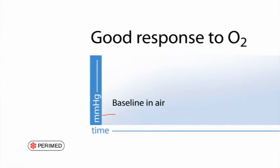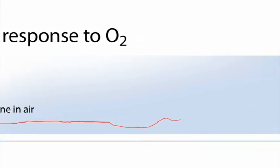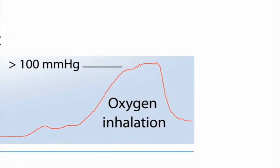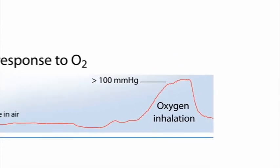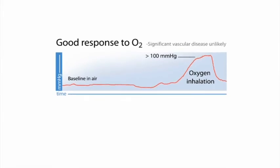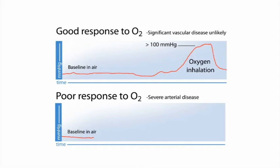In healthy people breathing 100% oxygen at normobaric pressure, TCPO2 values always increase to greater than 100 millimeters of mercury. Such a response to breathing oxygen indicates that significant macrovascular disease is not likely. An increase in TCPO2 when breathing normobaric oxygen that is less than 30 millimeters of mercury is consistent with severe arterial disease.